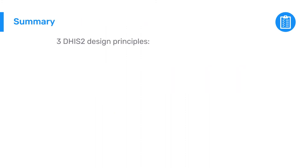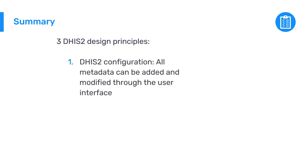In summary, we learned about three design principles related to DHIS2 customization. The first principle indicates that all metadata can be added and modified through the user interface. In practice, this is used for small-scale modifications due to the manual nature of this approach, making it impractical for large-scale changes. If making modifications or additions on a larger scale, mass importing applications can be used.